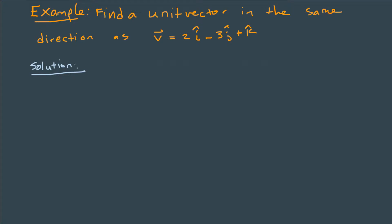So another example here, we have an example that says find a unit vector in the same direction as a given vector v. So the given vector is the vector 2, negative 3, 1.